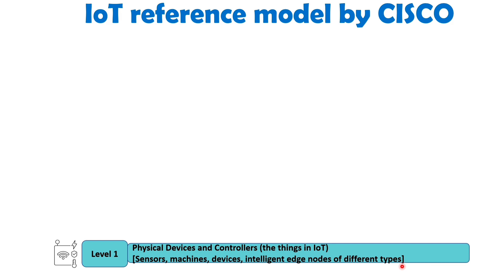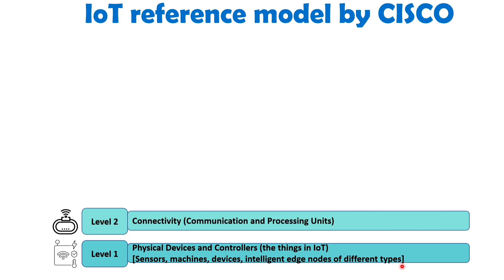Level two is Connectivity. This level represents the connectivity part of the IoT ecosystem. It encompasses the communication and processing units that enable connectivity between the IoT devices and the network. This layer includes technologies such as Wi-Fi, Bluetooth, cellular networks, gateways, routers and other networking components.